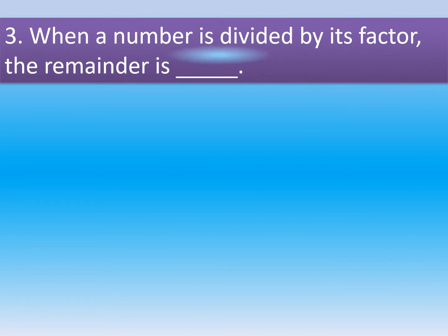Question 3. When a number is divided by its factor, the remainder is dash. Option A is 0, Option B is 1.